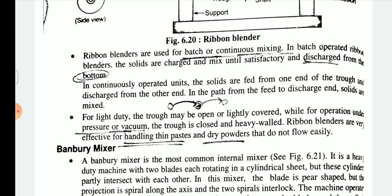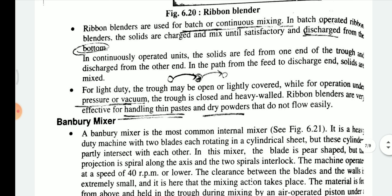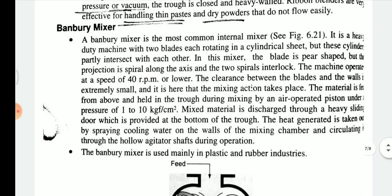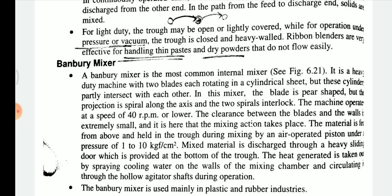For operation under vacuum conditions, the casing should be closed and the machine operated under vacuum with a heavy wall. Ribbon blenders are very effective for handling thin pastes and dry powders that do not flow easily.